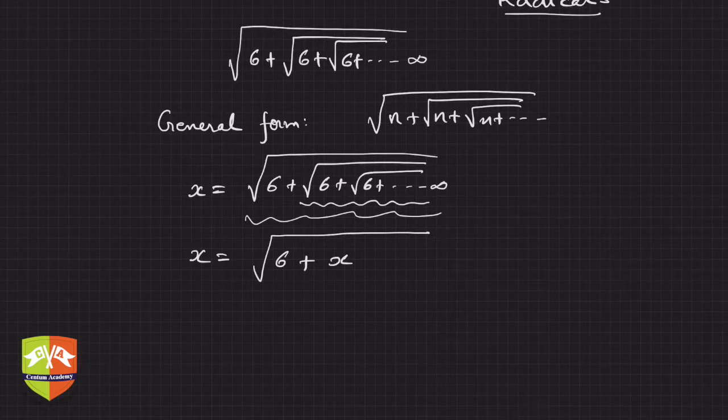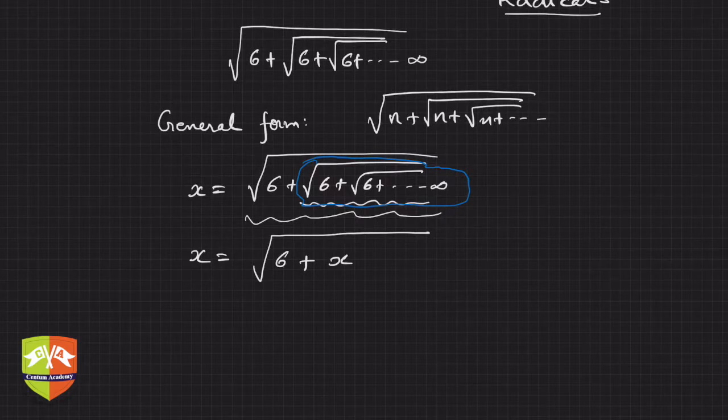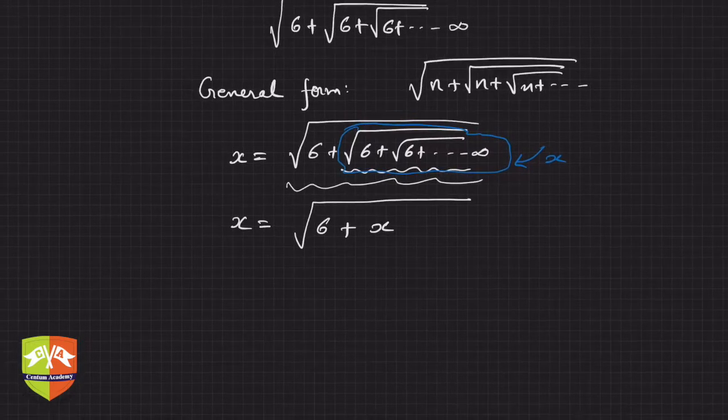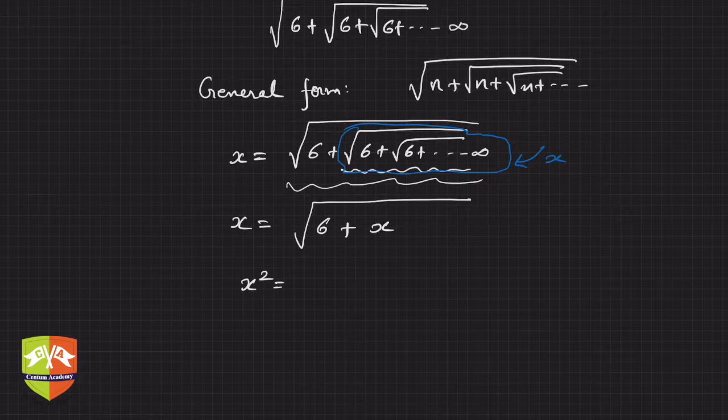Because if you see this thing itself you defined as x, and since it is extending till infinity, so hence this item as a whole you defined as x. So hence I can write x equals under root 6 plus x, and then rest is simple. You square both sides, you will get x square is equal to 6 plus x, and this becomes x square minus x minus 6 equals 0.